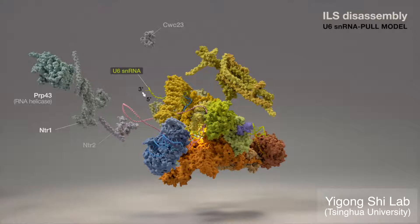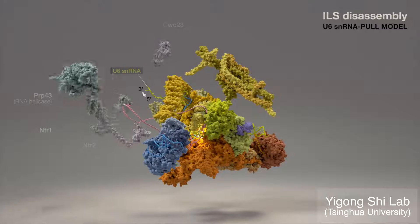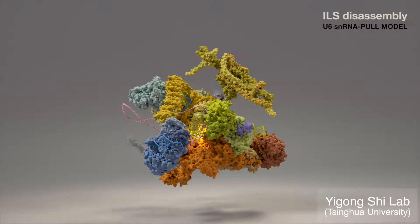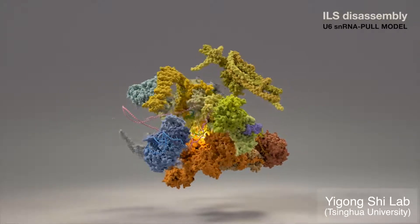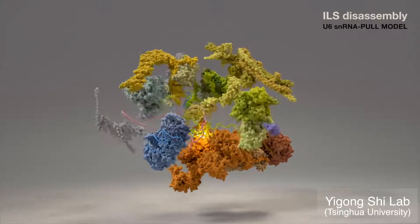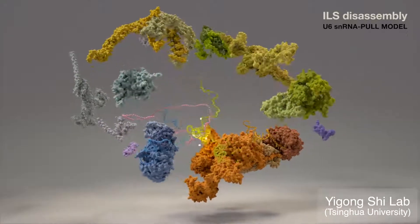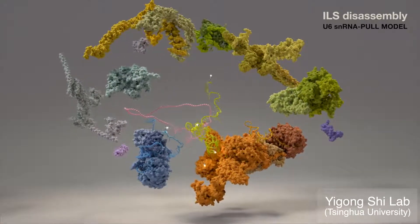In an alternative model, the 3' end of U6 RNA is approximately 4 nucleotides away; thus PRP43 may likewise pull in the 3' to 5' direction to help dismantle the spliceosome.